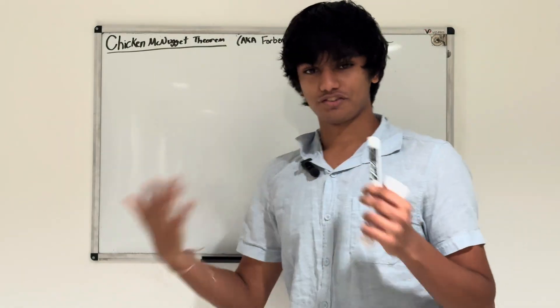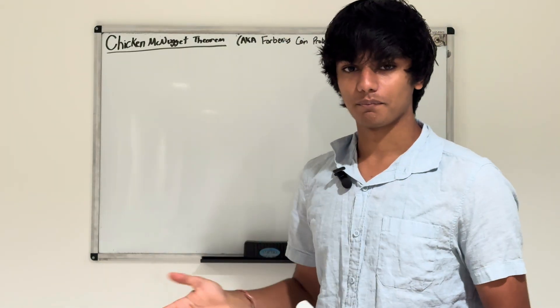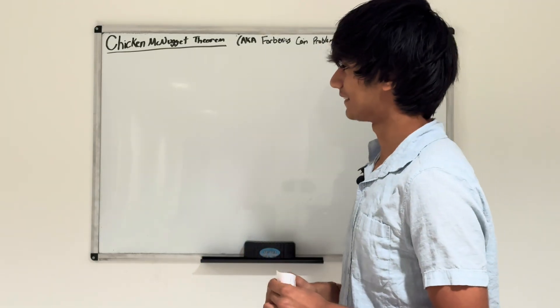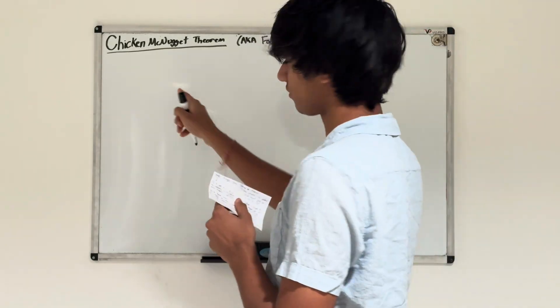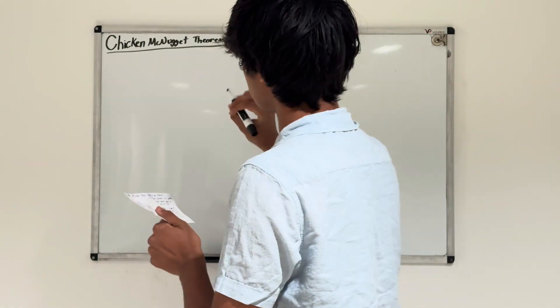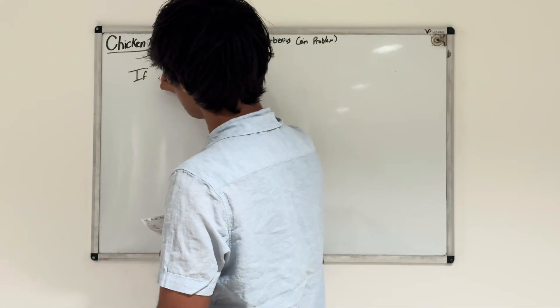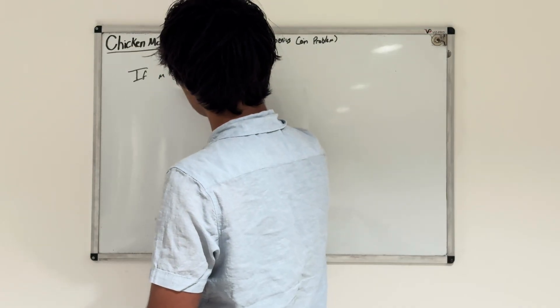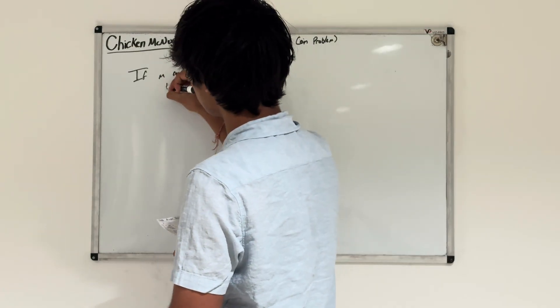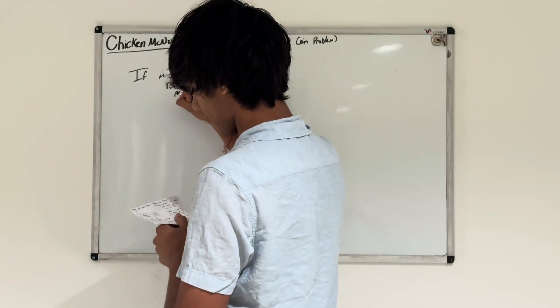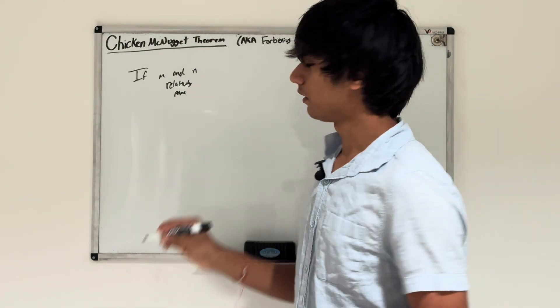I'll explain why the Chicken McNugget Theorem is called that way. It's an unusual name but it has a relevant connection to the theorem. So what is the Chicken McNugget Theorem? It states that if you have two numbers m and n...